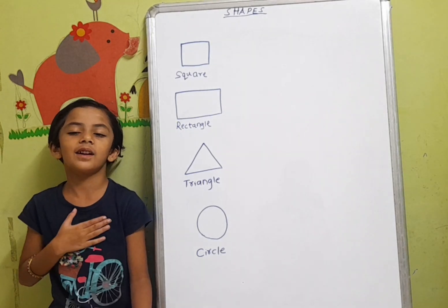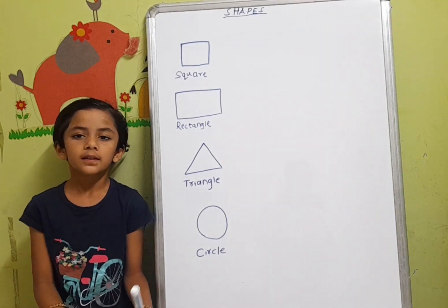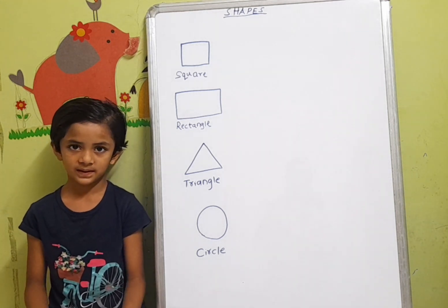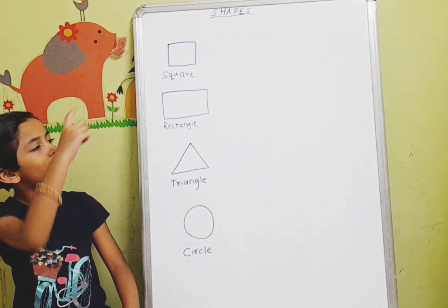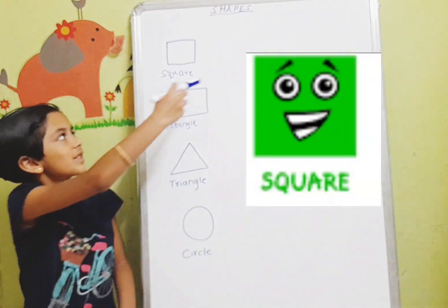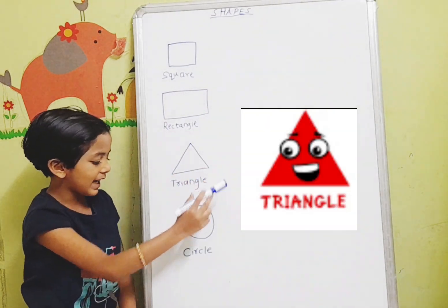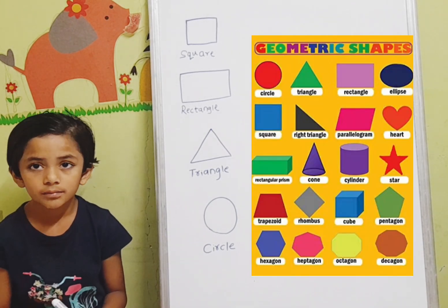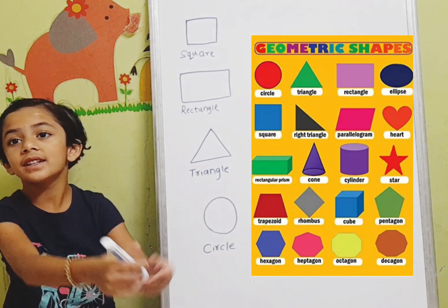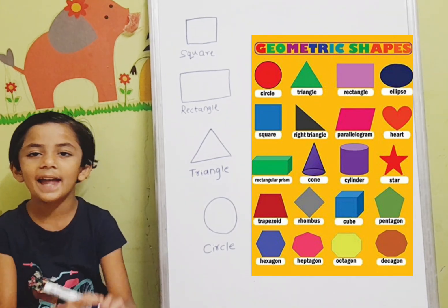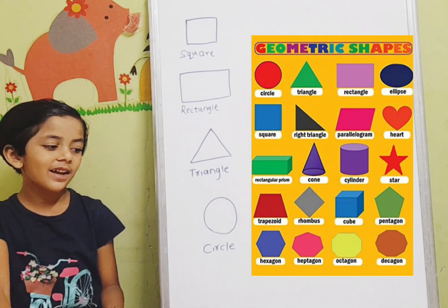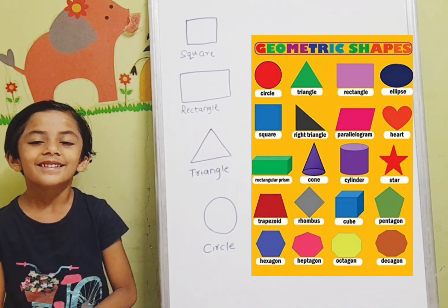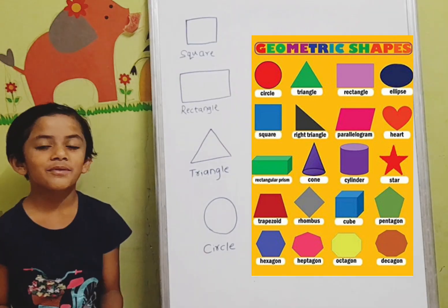Hello friends, welcome to my channel. Today we learn about shapes. There are four basic shapes: square, rectangle, triangle, circle. There are many shapes in geometry like hexagon, pentagon, diamond, right triangle, trapezoid.